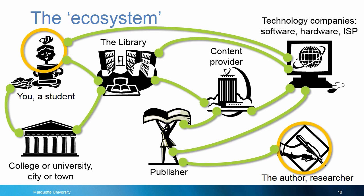And things can get more complicated. Some bigger publishers bypass the content provider companies and contract directly with libraries. But when any one of these links isn't set up correctly, or isn't there, that's when the ecosystem turns into a tangled web.